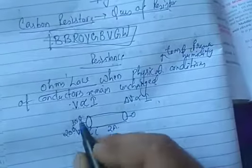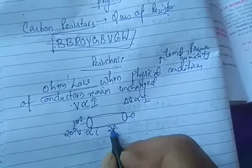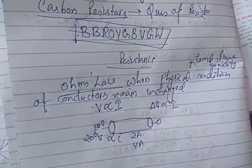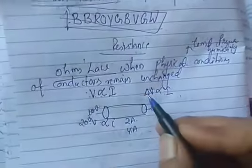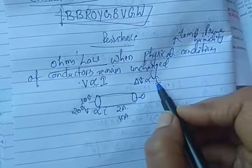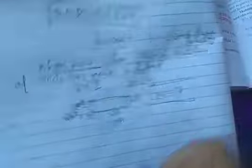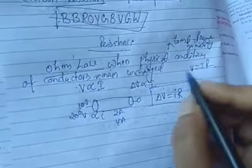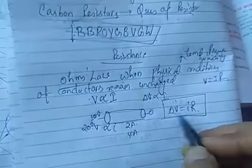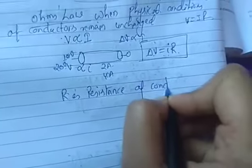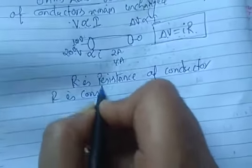If we change the potential, the current also increases proportionally. So we can write ΔV/ΔI, and since current increases with potential, we get ΔV = IR, where R is the resistance of the conductor. Previously we wrote V = IR, but here we write it in the form ΔV = IR. R is constant for ohmic conductors.